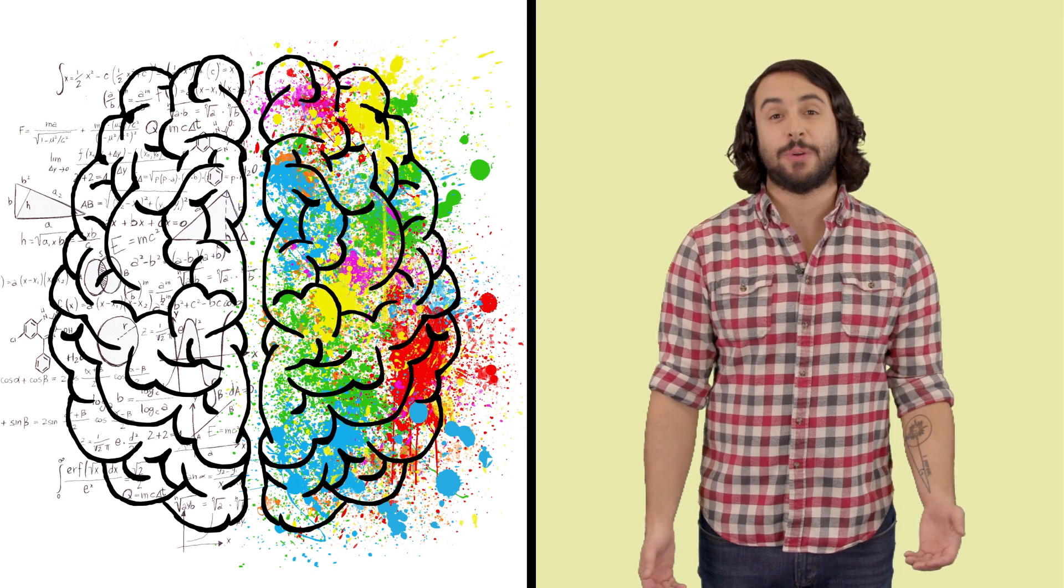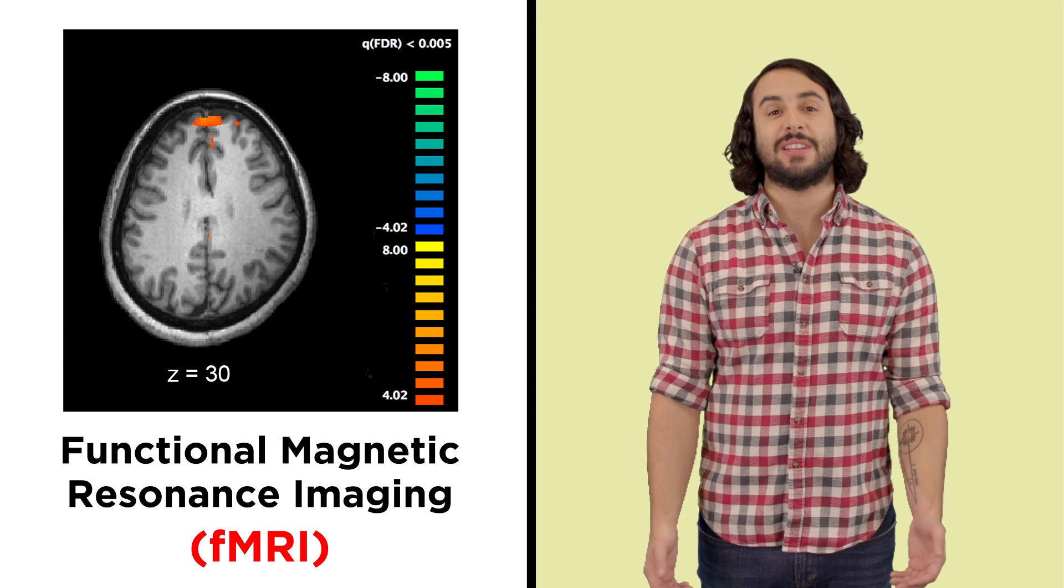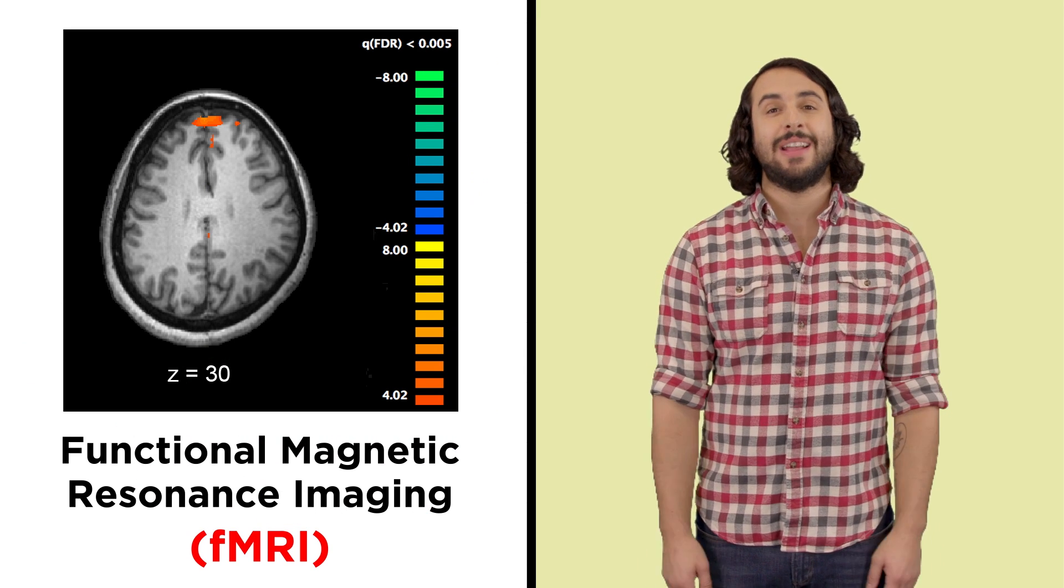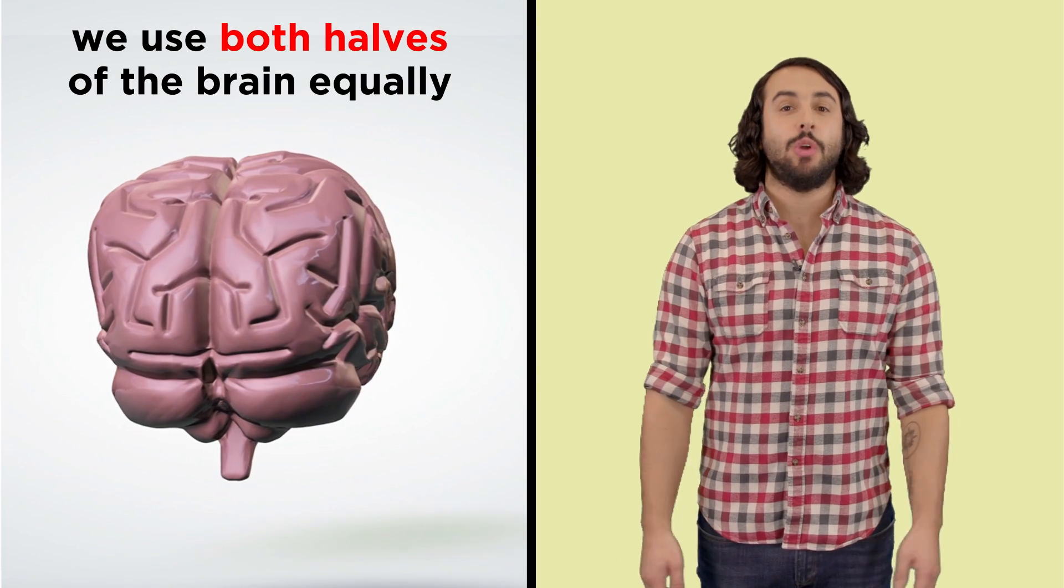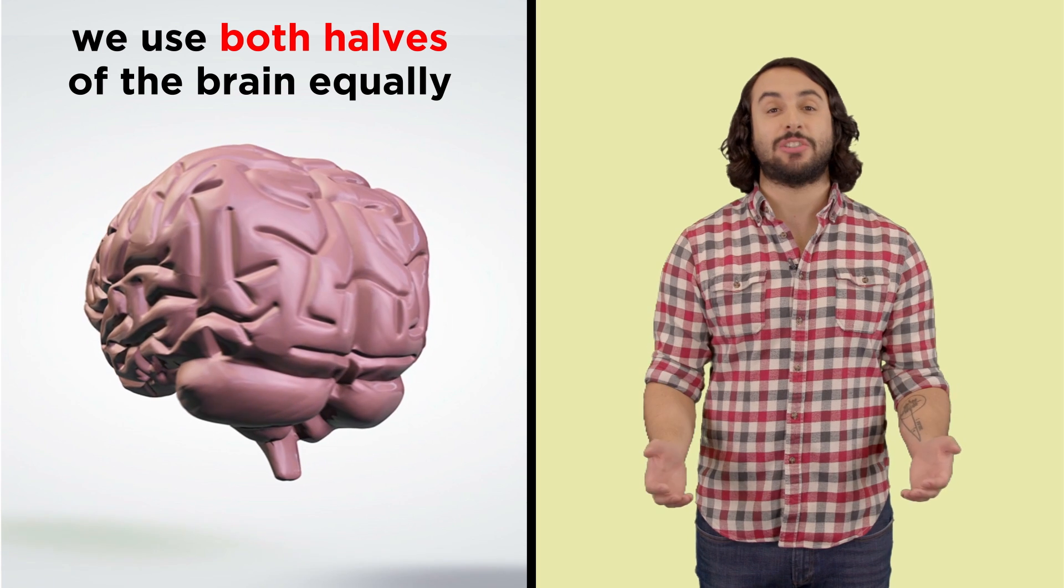The two hemispheres are different, yet brain imaging technologies like functional magnetic resonance imaging, or fMRI, suggest that, on average, we use both sides of our brain equally. We are all brain ambidextrous.